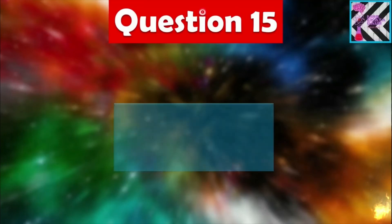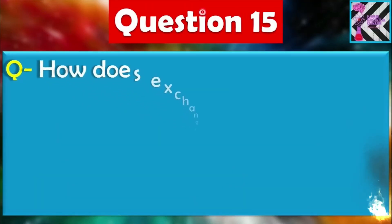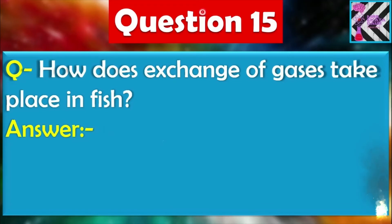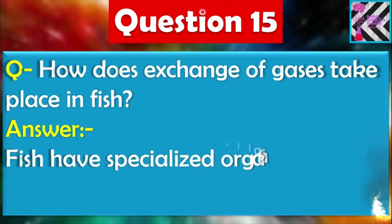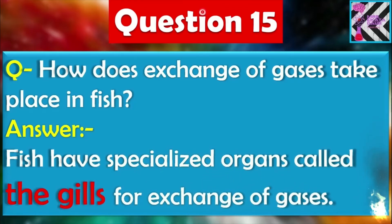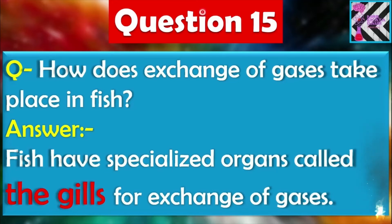Question number fifteen: How does exchange of gases take place in fish? Fish have specialized organs called gills for exchange of gases. I have explained and shown the structure of gills in one video, so if you want to see the gills you can watch that video also.